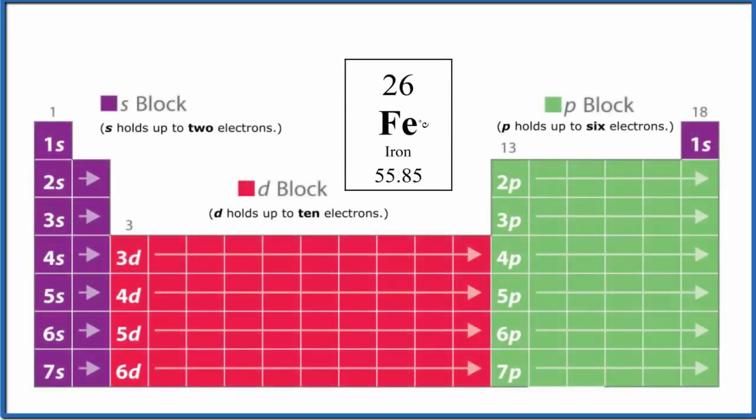Let's write the atomic orbital diagram for iron, Fe. The first thing we need to do is write the electron configuration for iron.